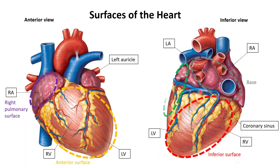The last surface is the left pulmonary surface, also called the lateral surface. It is partly made up of the left atrium and mostly made up of the left ventricle. It gets its name from the fact that it faces the left lung.